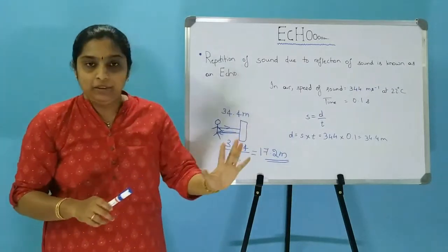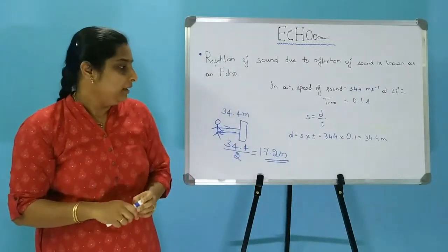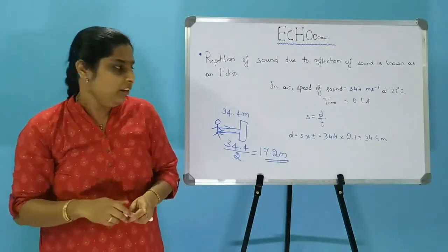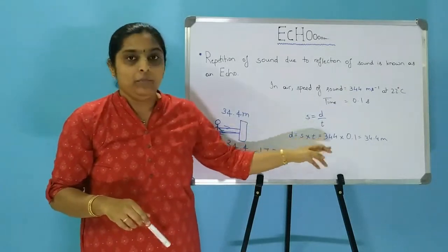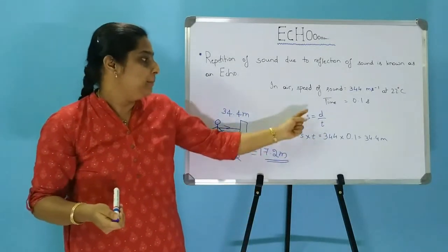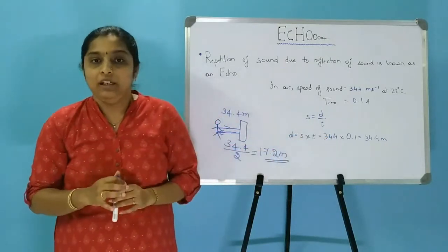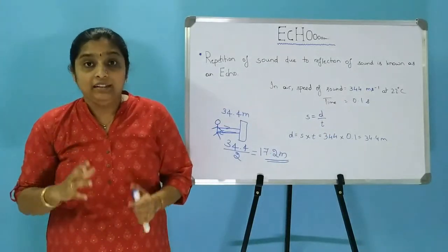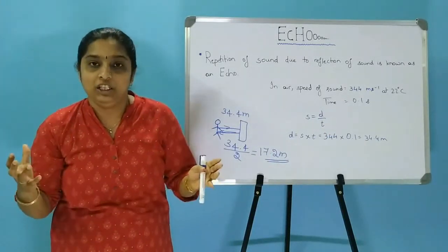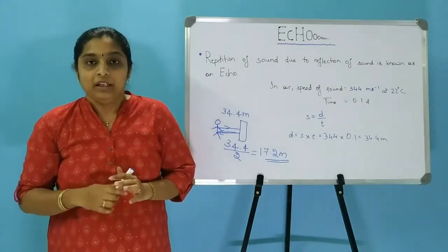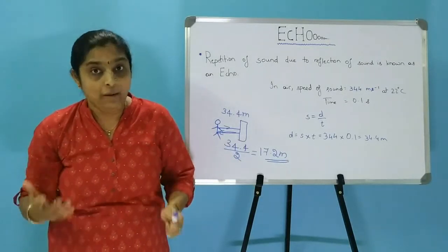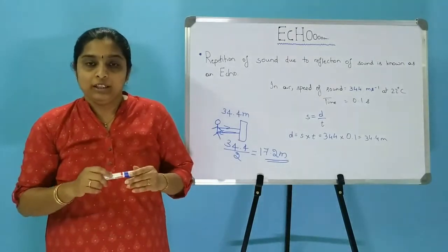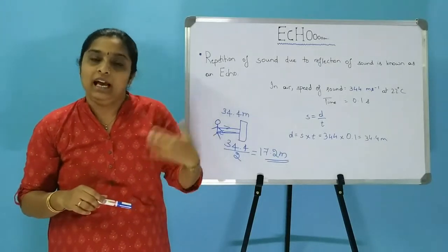We can also find out at what distance an object is placed if we know the speed of sound and the time. This process is known as echolocation. Even bats and dolphins use the same process to identify the position of their prey. We will understand this better in our next video.